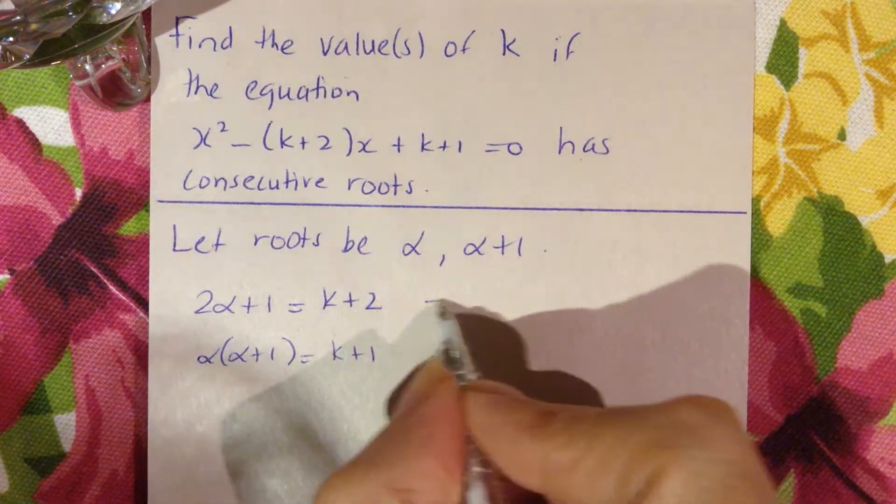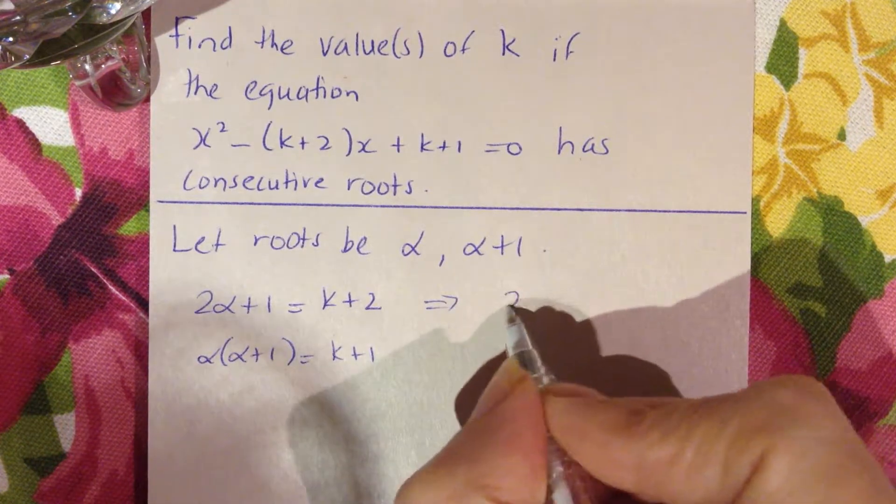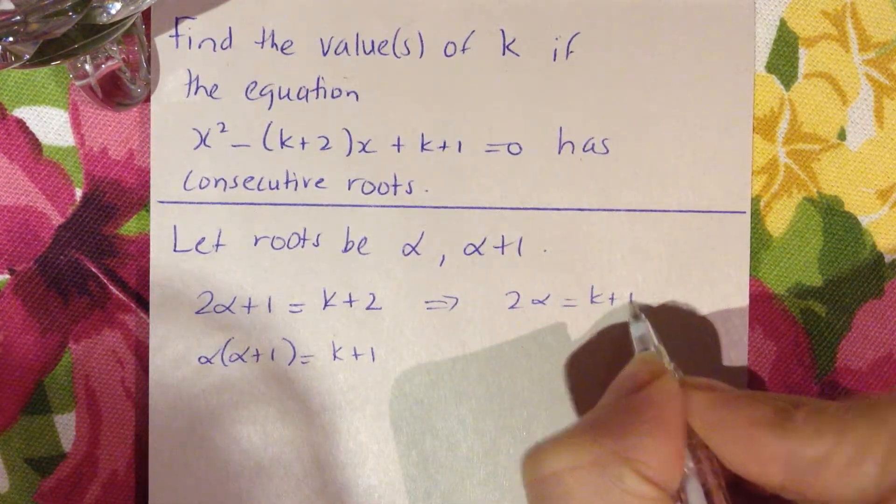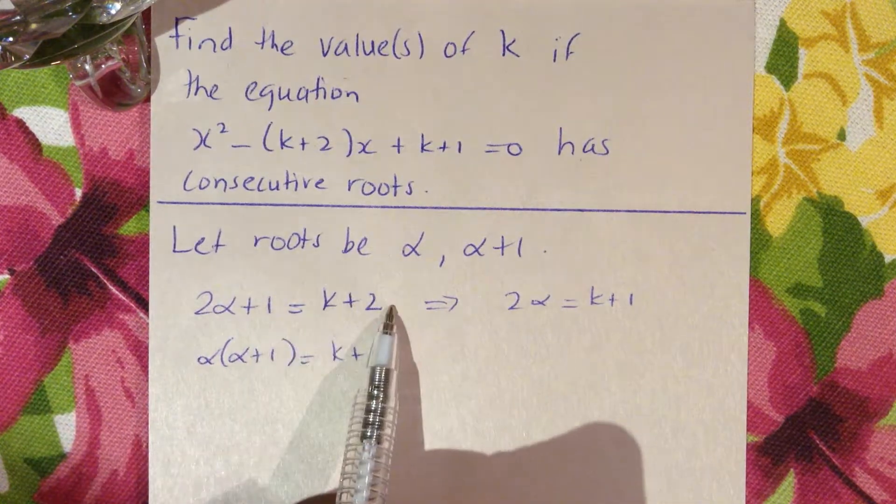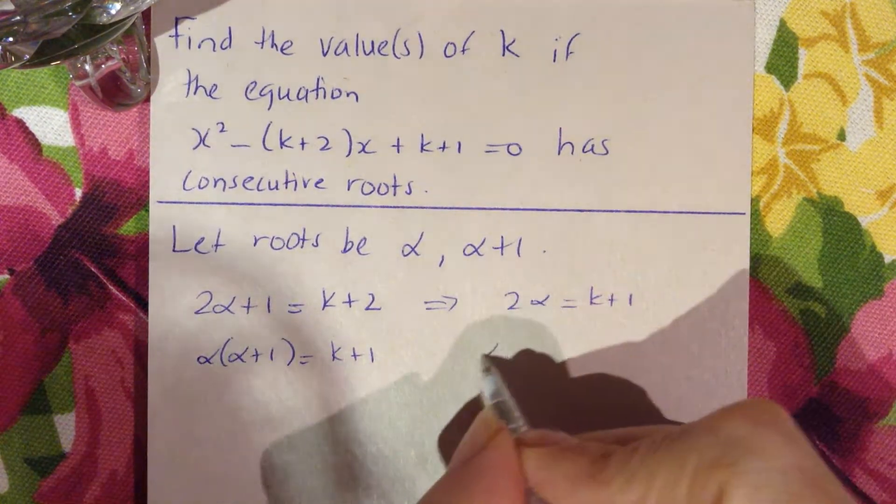Now this one becomes 2α = k+1 when you clean that up, take away 1 from both sides. This one stays as it is.